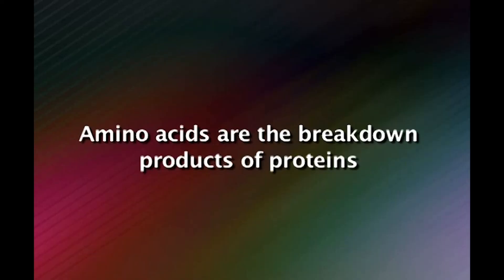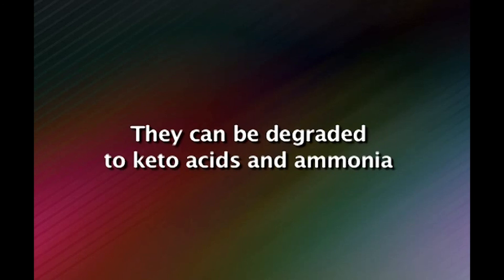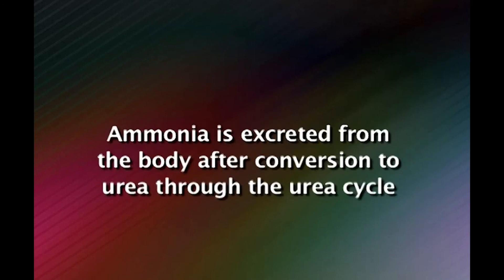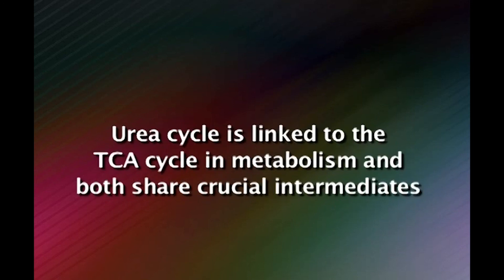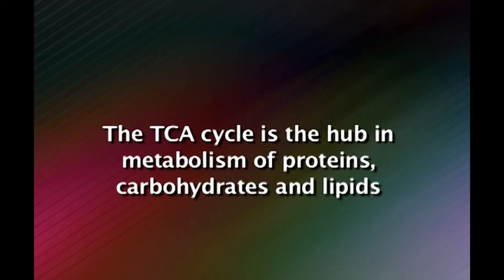To conclude: amino acids are the breakdown products of proteins and can be degraded into keto acids and ammonia. Ammonia is excreted after conversion to urea through the urea cycle, which is linked to the TCA cycle, both sharing crucial intermediates. The TCA cycle is the hub in metabolism of proteins, carbohydrates, and lipids. In the next class, we will be dealing with oxidative phosphorylation, the third respiratory cycle of energy formation.